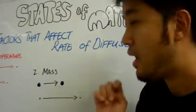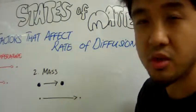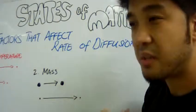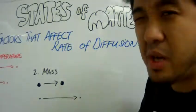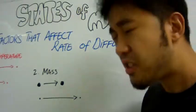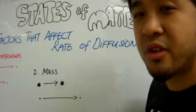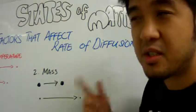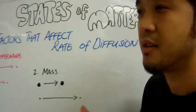Secondly, mass. How does mass affect the rate of diffusion? Now, when you have something that's massive, something that's big and heavy, that thing is going to move at a much slower rate. Why? It's simply simple logic. For example,